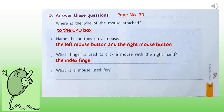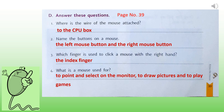The fourth question is: what is a mouse used for? The answer is: we can use a mouse to point and select things on the monitor. It can also be used to draw pictures on the computer and play games.